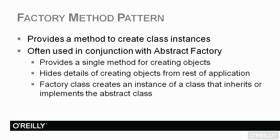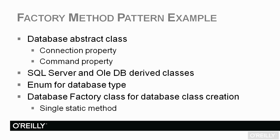The factory class will create an instance of a class that inherits or implements the abstract class. As a basic example, we have an abstract factory with our database abstract class, which has a connection property and a command property — the same thing we talked about in the abstract factory. Then we'll have SQL Server and OleDB derived classes, and we could have Oracle or MySQL classes as well. We also have an enum for the database type, which tells the factory method what type of database to create — SQL Server, OleDB, or whatever. Then we have a database factory class for the actual database class creation, and this will be a single static method.